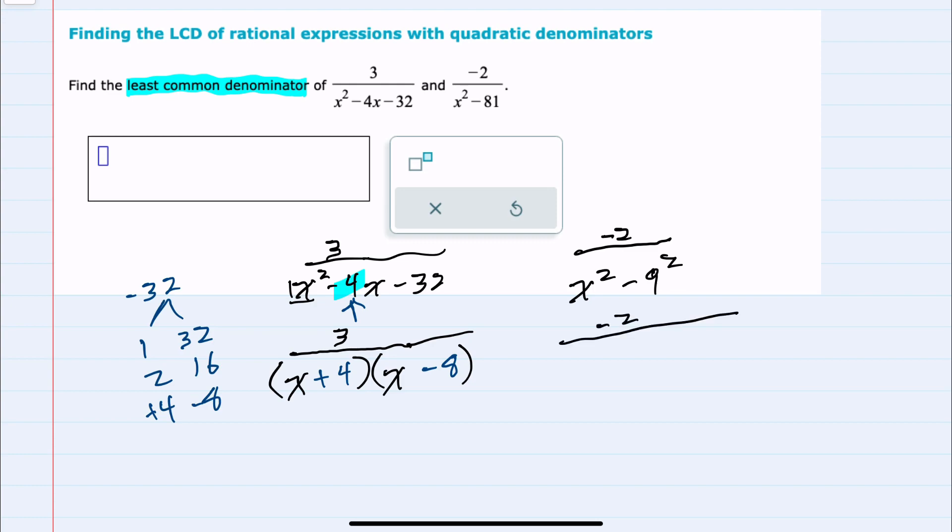When I have the difference of two squares, I can factor it as the first term, x, minus the second, so minus 9, and then that first term plus the second, so (x + 9).